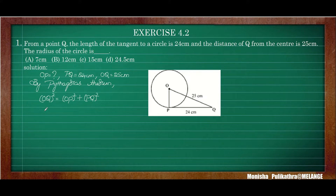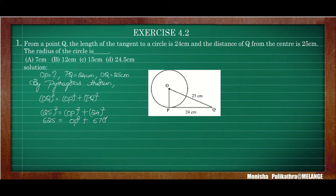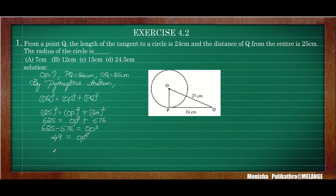OQ is 25, so 25 square equals 625, which is equal to OP square plus 24 into 24, which is 576. Shifting 576 to the left-hand side: 625 minus 576 is equal to OP square. 625 minus 576 is 49, so OP square equals 49. When I shift the square to this side, it becomes square root. Therefore, OP is equal to the square root of 49, which is 7. The value for radius OP is 7 cm.